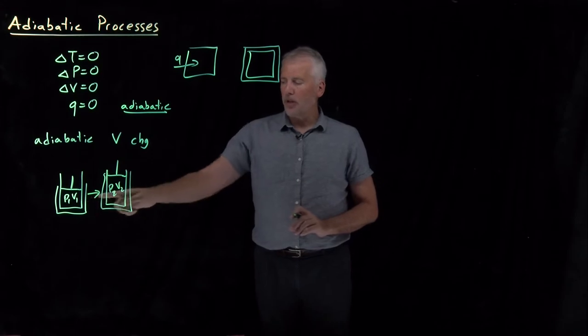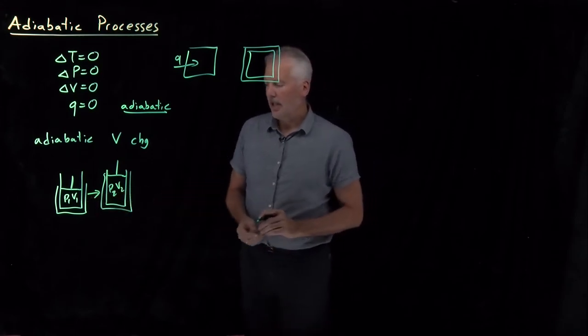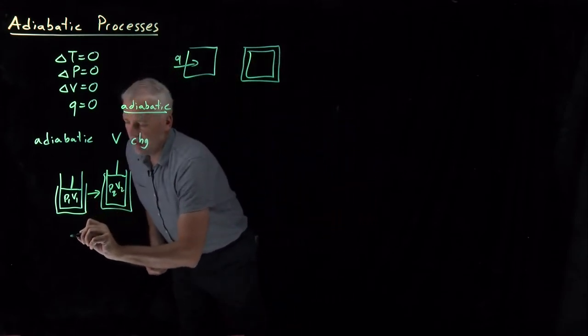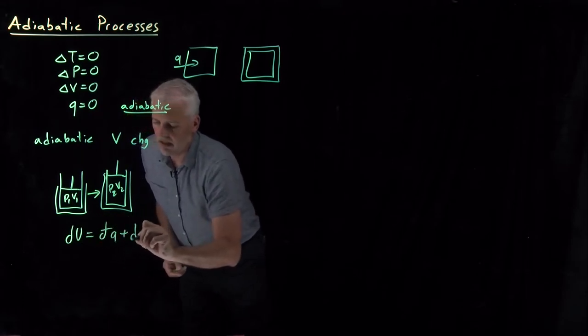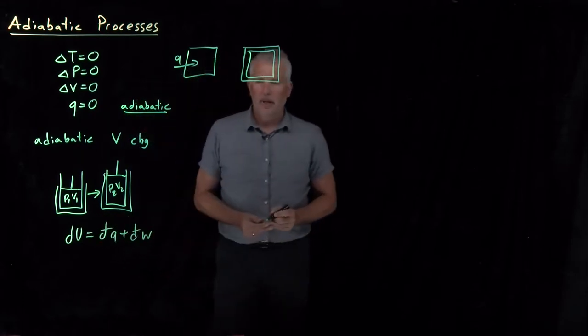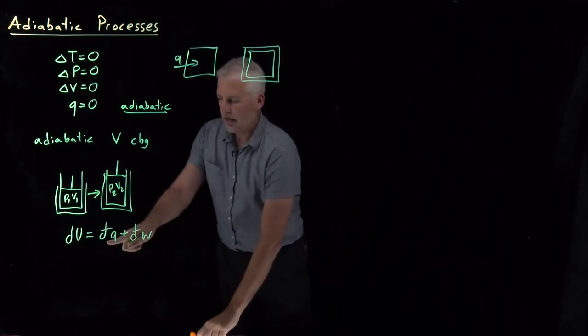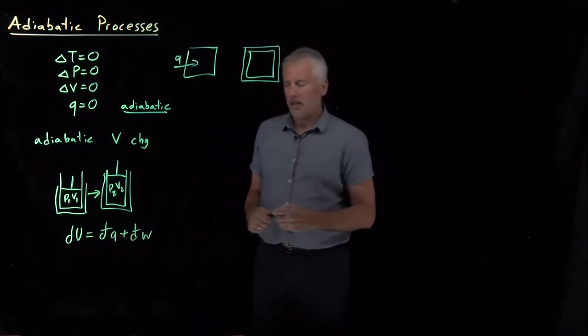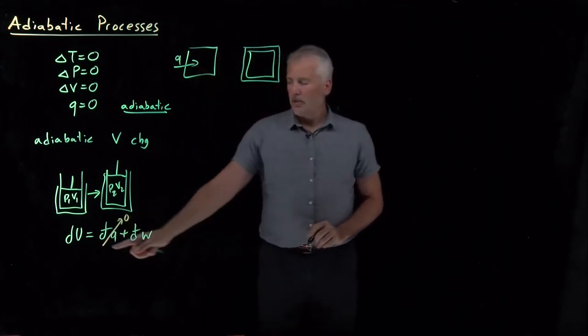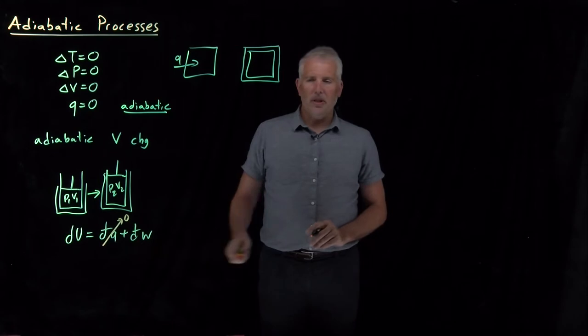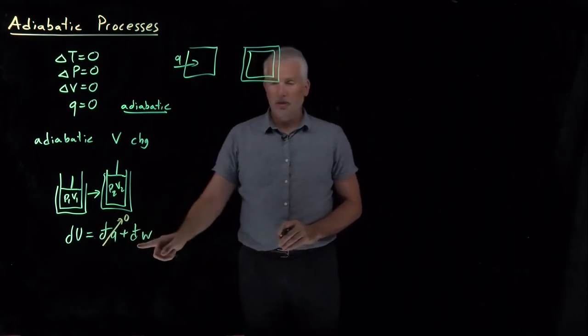If we think about what's going on in that adiabatic process, by definition, if it's adiabatic, there's no heat transfer in the process. So the heat transfer is zero. So dU must be equal to dW.